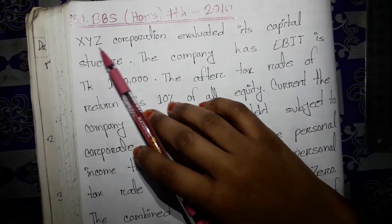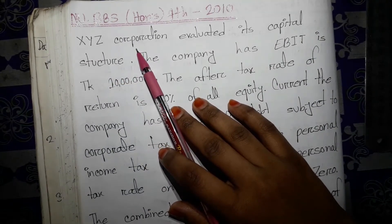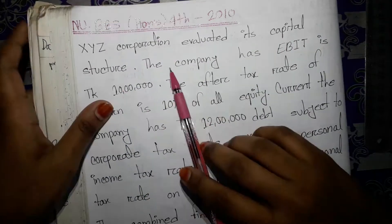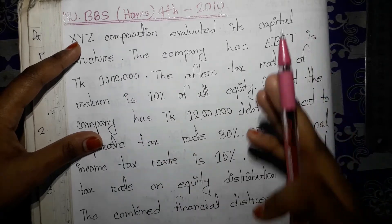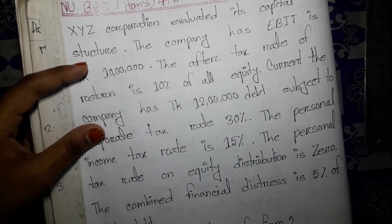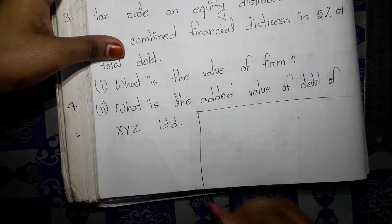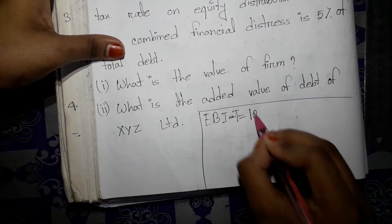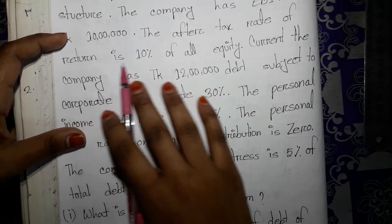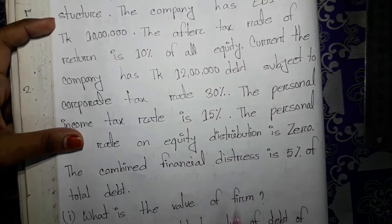The first question is: XYZ Corporation evaluates its capital structure. The company has EBIT of 10 lakhs. So the value of EBIT is 10 lakhs, and the cost of equity capital is given.